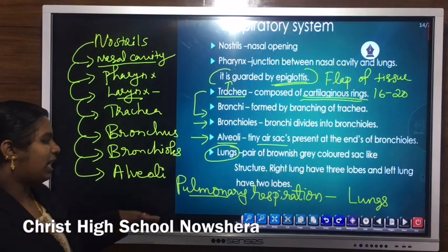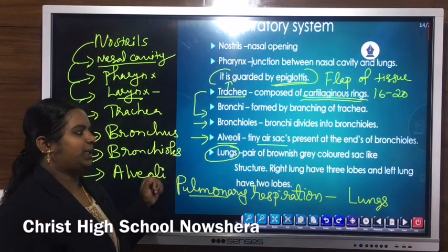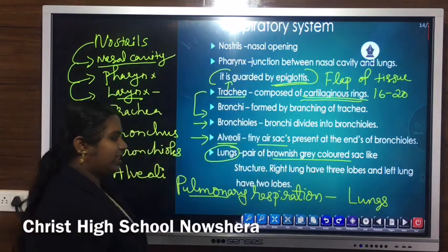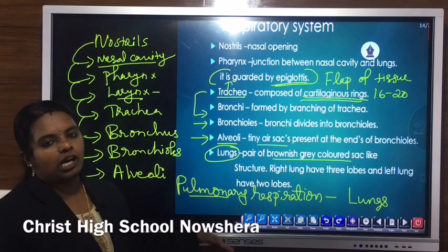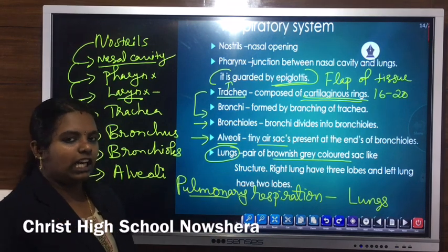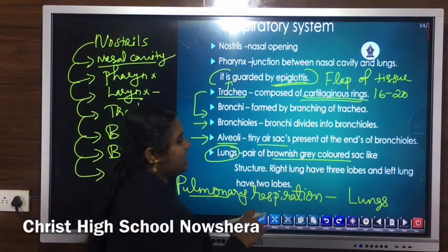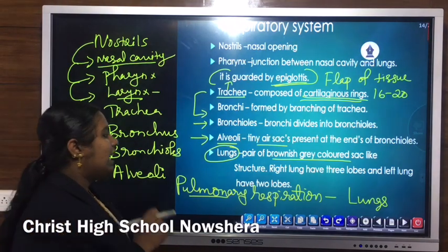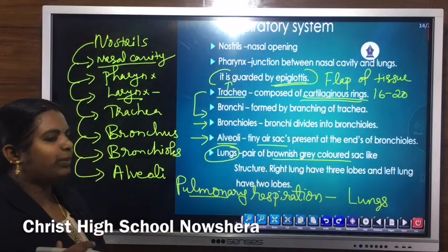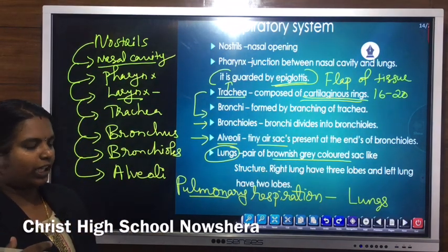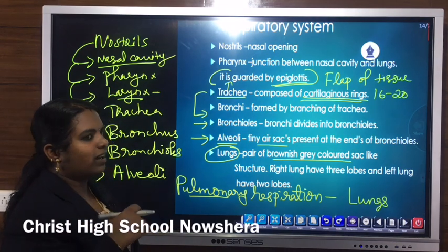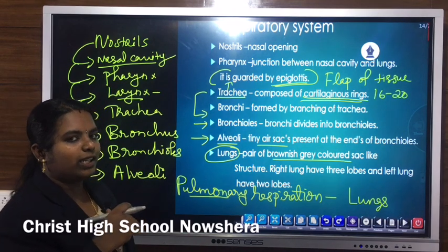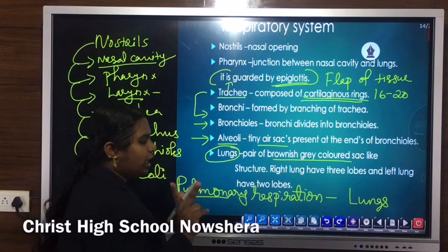Most land animals possess pulmonary respiration and have a pair of brownish-gray colored sac-like lungs. The right lung has three lobes and the left lung has only two lobes, because the heart is slightly tilted toward the left side. Due to the presence of this cardiac notch, the left lung has only two lobes.